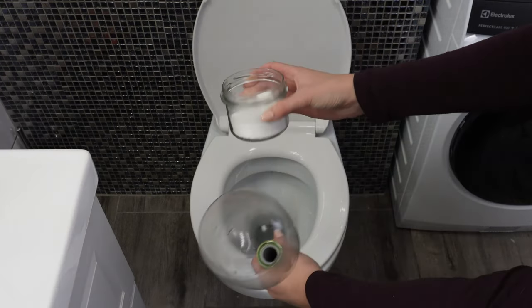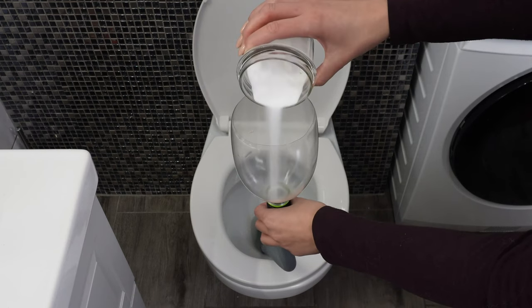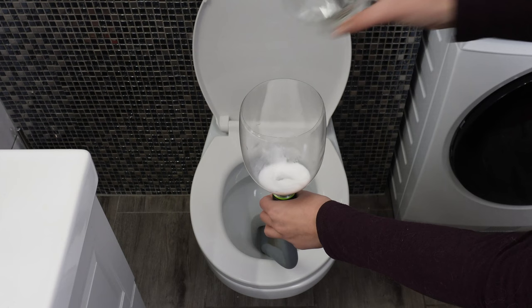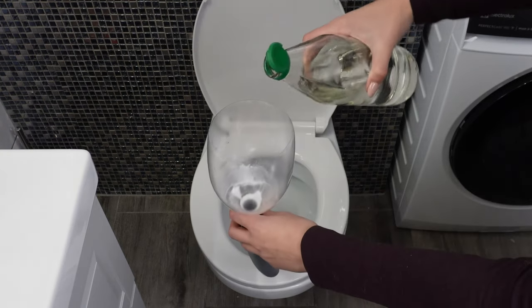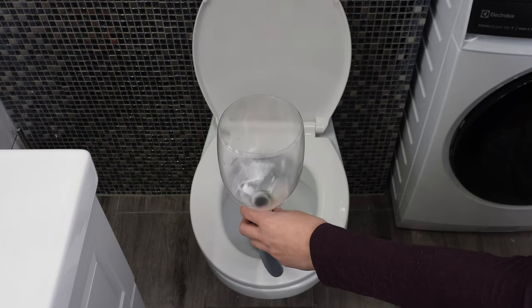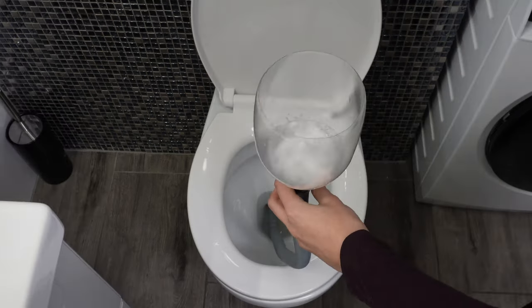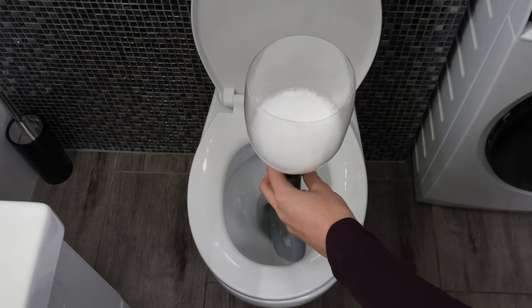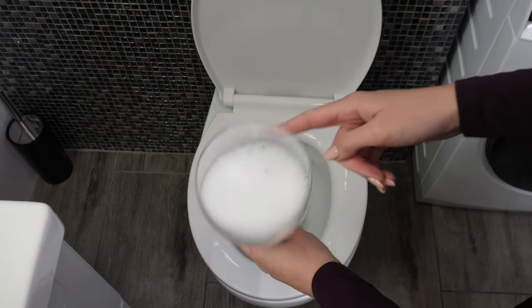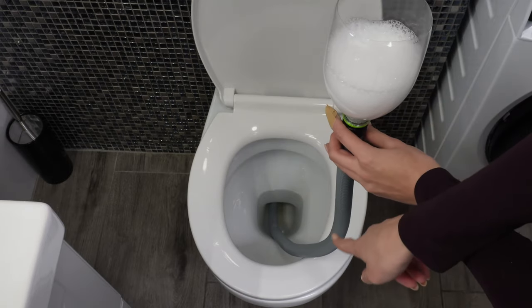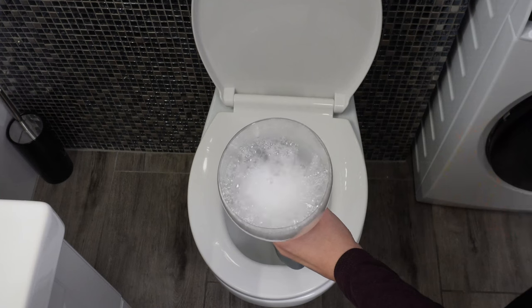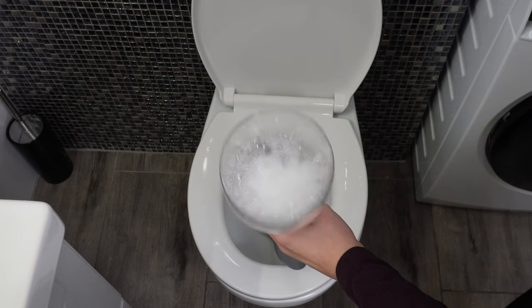Pour a cup of baking soda into it. It has a cleaning and disinfecting effect. Shake the hose to make the powder fall to the bottom. Then pour a cup of vinegar into it. It will react with the baking soda, creating a foaming reaction. It will clean the pipe from lime deposits and flush out the dirt clogging the drain. The chemical reaction will help eliminate the sludge responsible for the unpleasant odor in the toilet. This action will keep the pipes in good condition for longer, and you won't have to use a plumber's services.